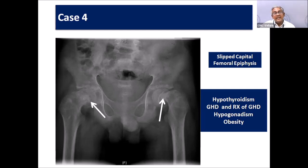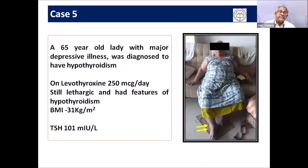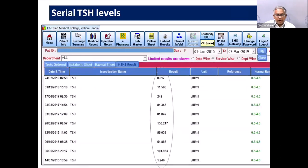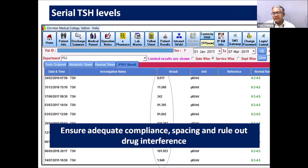Case 6: A 65-year-old lady with depressive illness and hypothyroidism on 250 micrograms of thyroxine, still clinically hypothyroid with TSH of 101. Serial TSH values showed a pattern: whenever she took medication, TSH became suppressed; when she stopped, it rose back to hypothyroid range. This was non-compliance. In patients with psychiatric disorders, thyroxine should be given under supervision daily to ensure adequate compliance.